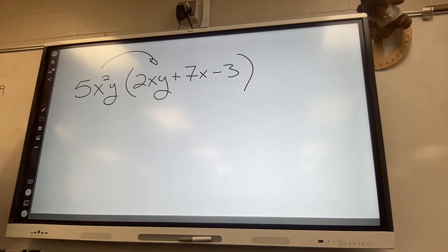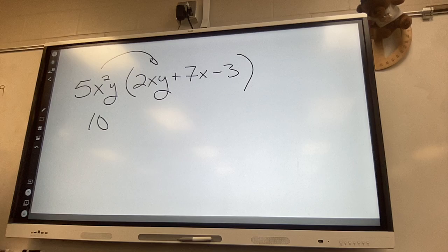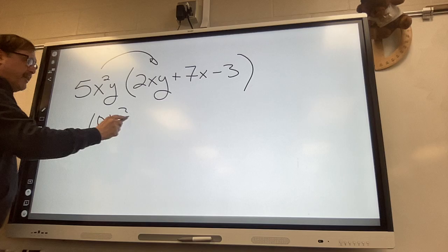So here's what we do. We multiply regular five times regular two is regular ten. We use our exponent rules x to the second times x to the first is x to the third. Y to the first y to the first is y to the second.